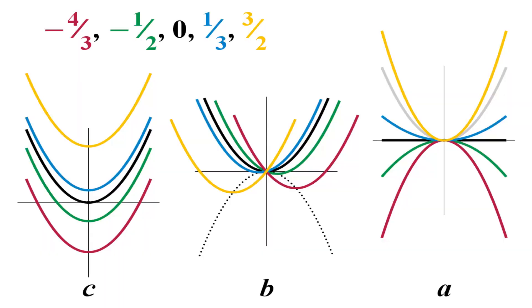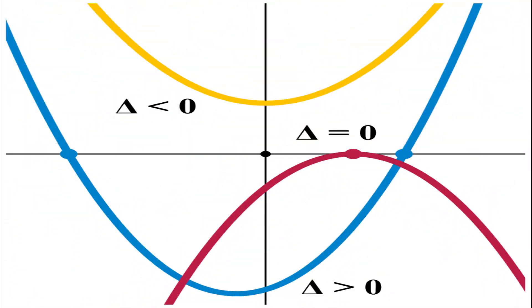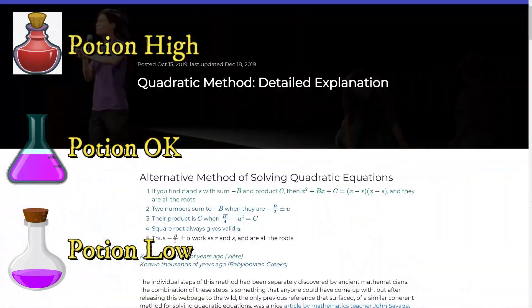Can you believe that something new in basic mathematics has been discovered just recently? We now have a new, easier method to solve quadratic equations using only formulas that have been known for hundreds or thousands of years. This method was introduced on October 13, 2019 by American mathematician Po Shen Lo on his website.